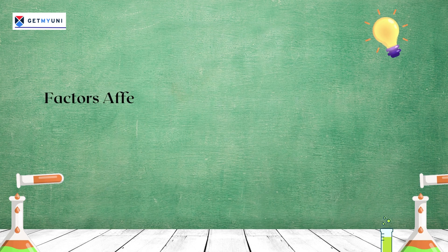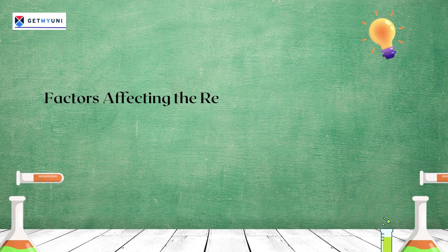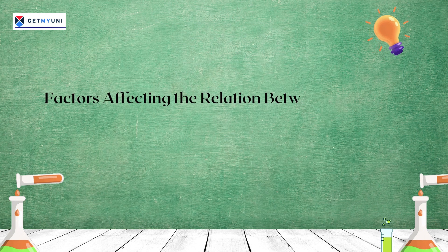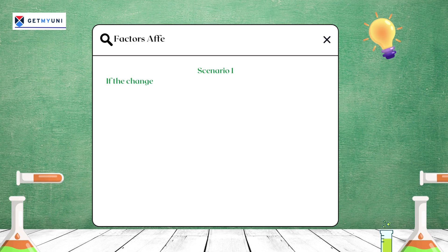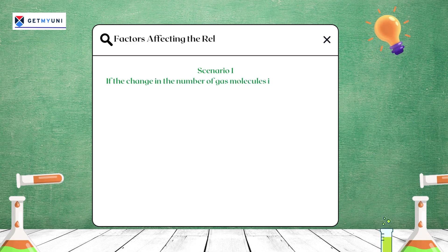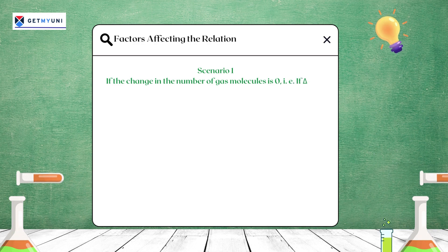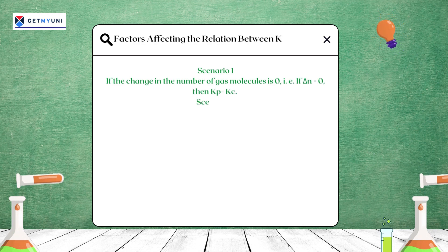The factors affecting the relation between Kp and Kc depend on the value of the number of moles of gas molecules involved in the reaction. The three possible scenarios that affect the relation between Kp and Kc are shown on the screen.